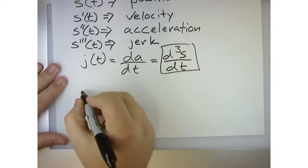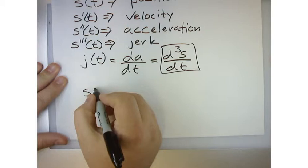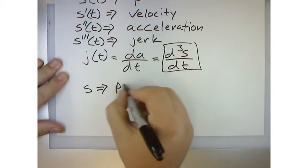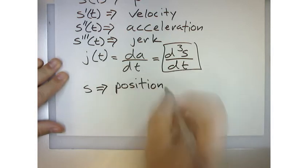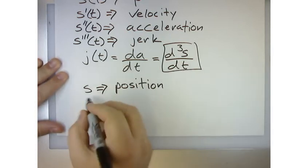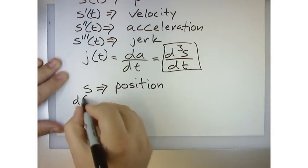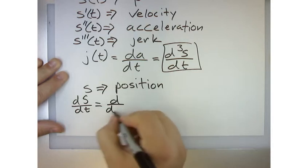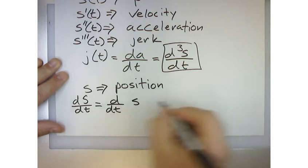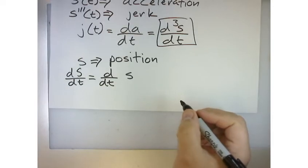So if I say s of T, right, this is position. Now s prime would be the derivative of S with respect to T, which is really the derivative with respect to T of the function S. Okay. Does that make sense so far? Yeah.